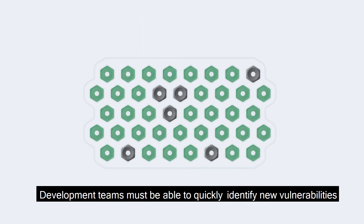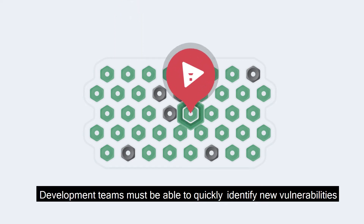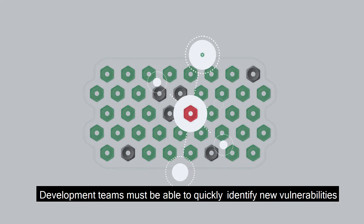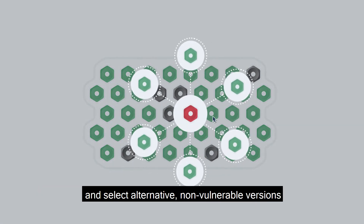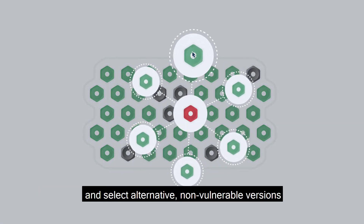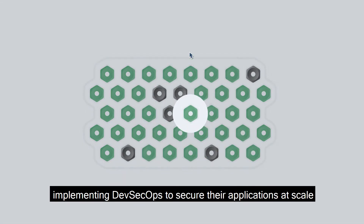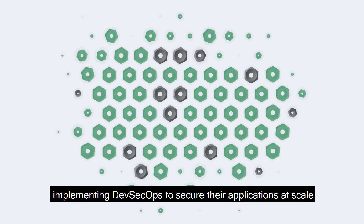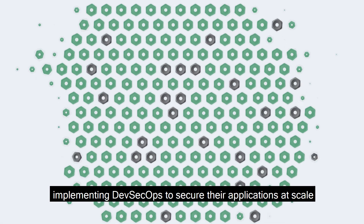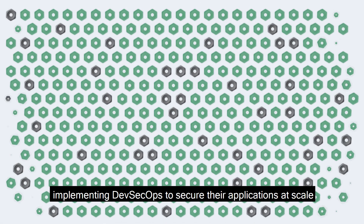Development teams must be able to quickly identify new vulnerabilities and select alternative, non-vulnerable versions, implementing DevSecOps to secure the applications at scale.